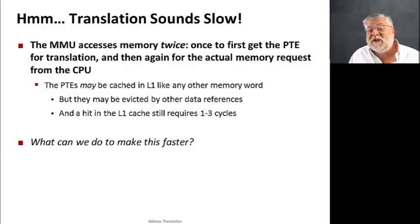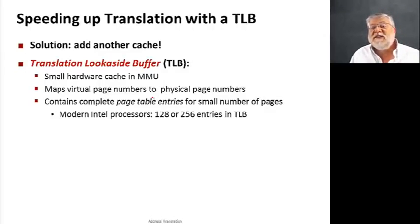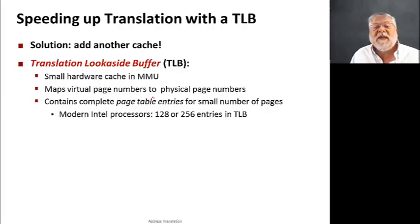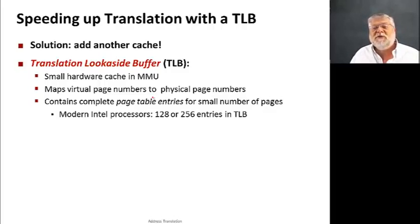This starts to potentially add up since we're doing this for every memory address. So how can we make this process go faster? To do that, we're going to create another construct called a translation look-aside buffer, or TLB. This is a special small cache that the MMU uses to store page table entries, keeping them around in case it needs them again. Because of locality, we'll likely be accessing many bytes of memory in the same page, so we'll reuse the same page table entry over and over.